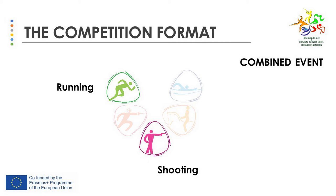The combined event will begin with a handicapped start based on the results after the previous events. The leader will start first, followed by the next placed pentathlete, who will start 1 second later for every 1 point trailed. For example, a 4 point advantage would allow the leader a head start of 4 seconds.